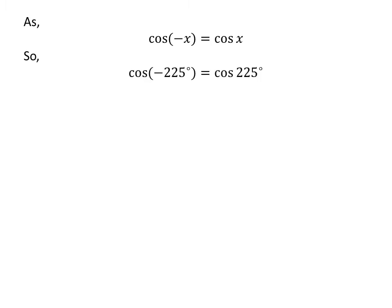Let us apply the above identity for cosine of minus 225 degrees. Here, x is 225 degrees. So cosine of minus 225 degrees is equal to cosine of 225 degrees.